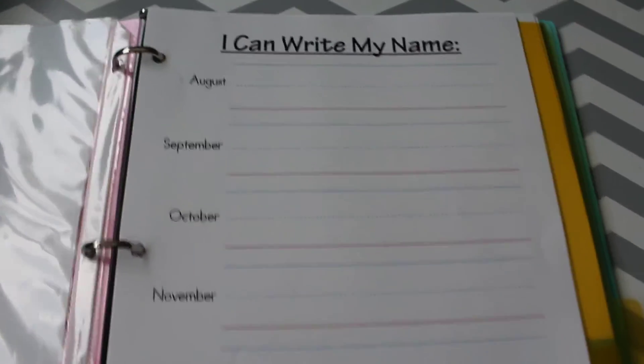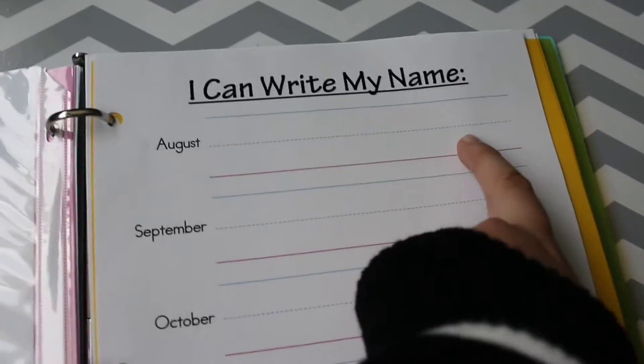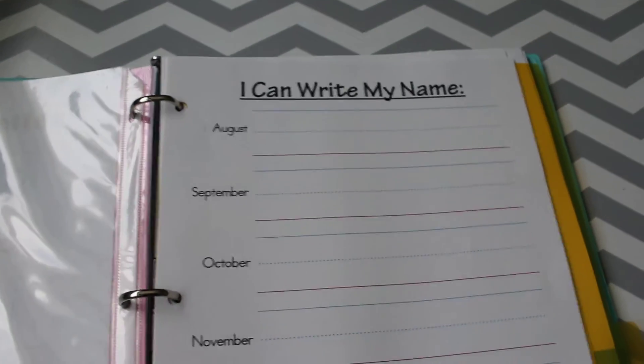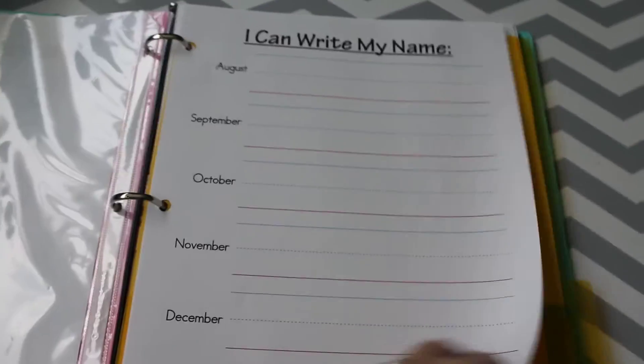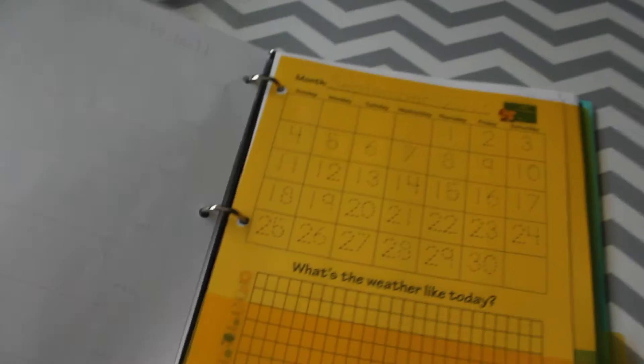This one is every month at the beginning of the month I'll have them write their name and then they'll just see how their handwriting is progressing throughout the year from August to May.